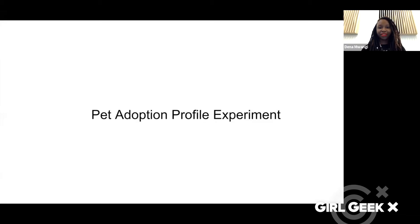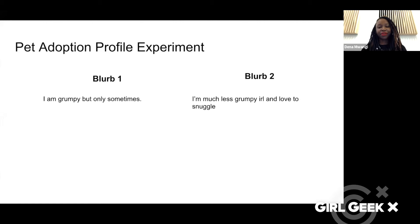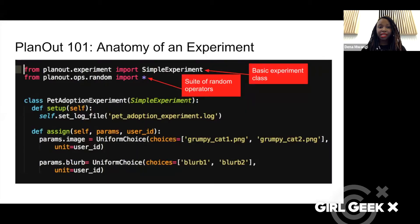I find it best to learn about a new tool by walking through an experiment. So we're going to walk through a quick one with a pet adoption profile. Suppose you had an app trying to get a pet adopted — suppose it's this particular cat — and you think that if you play around with the image you're showing, you'll have more interest and more clicks on the cat's profile. You also want a blurb with it. So we have two images and two blurbs, giving us four options we're randomly showing to our users. This is pretty much all the code that it would take to run this with PlanOut.